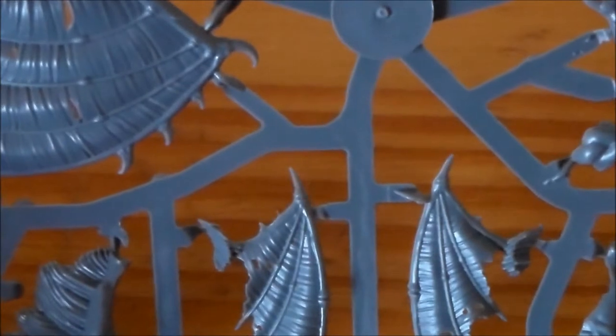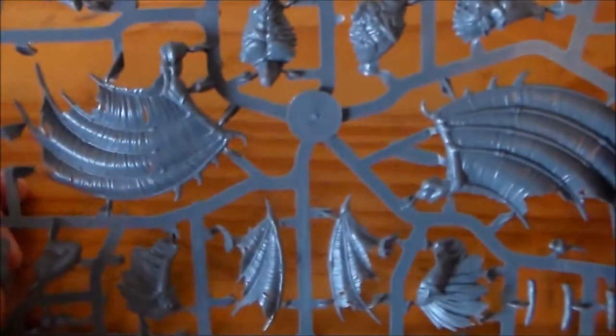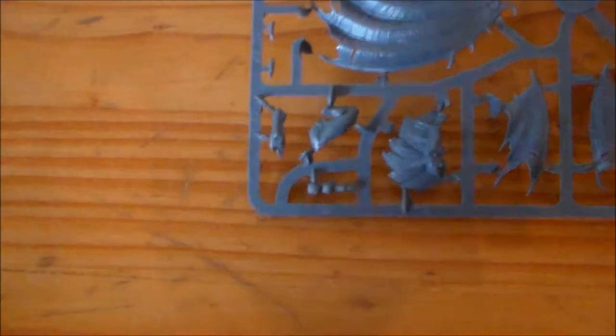So the other one is on the other side. So I'd imagine without even looking at the rest of the sprue, there's only two wings on that, or two big wings. So I'd imagine the other two are on the rest of the sprue.